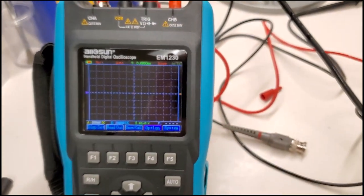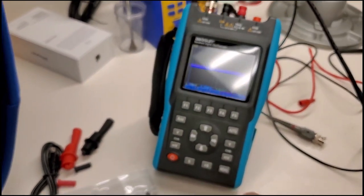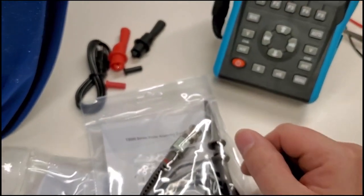All right, guys, that is the Allosun EM-1230. It seems to be an excellent little meter. I just got to learn the menus. And it comes with lots of good stuff. I'm going to put it all back in his bag. This guy is going to be very nice.